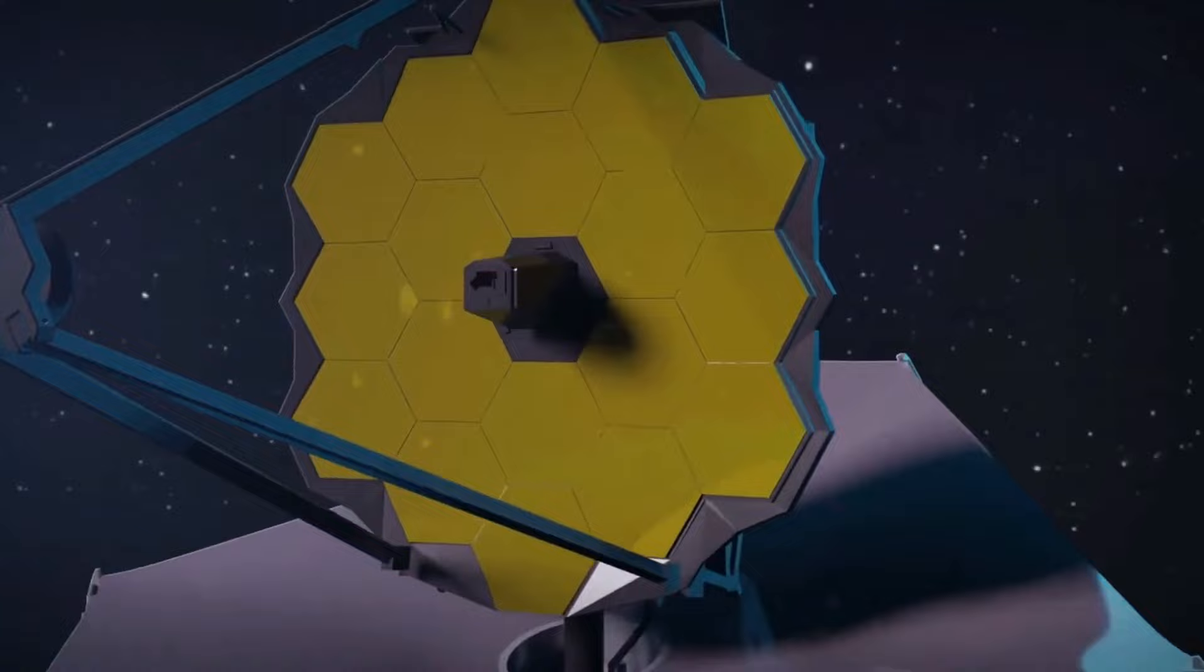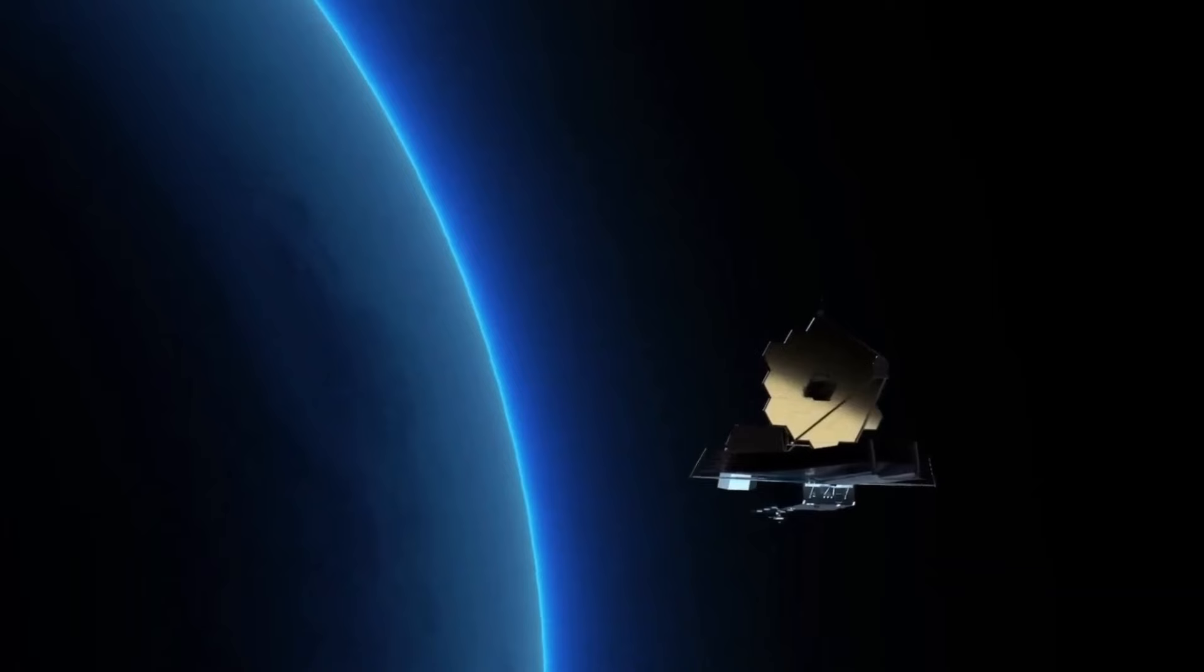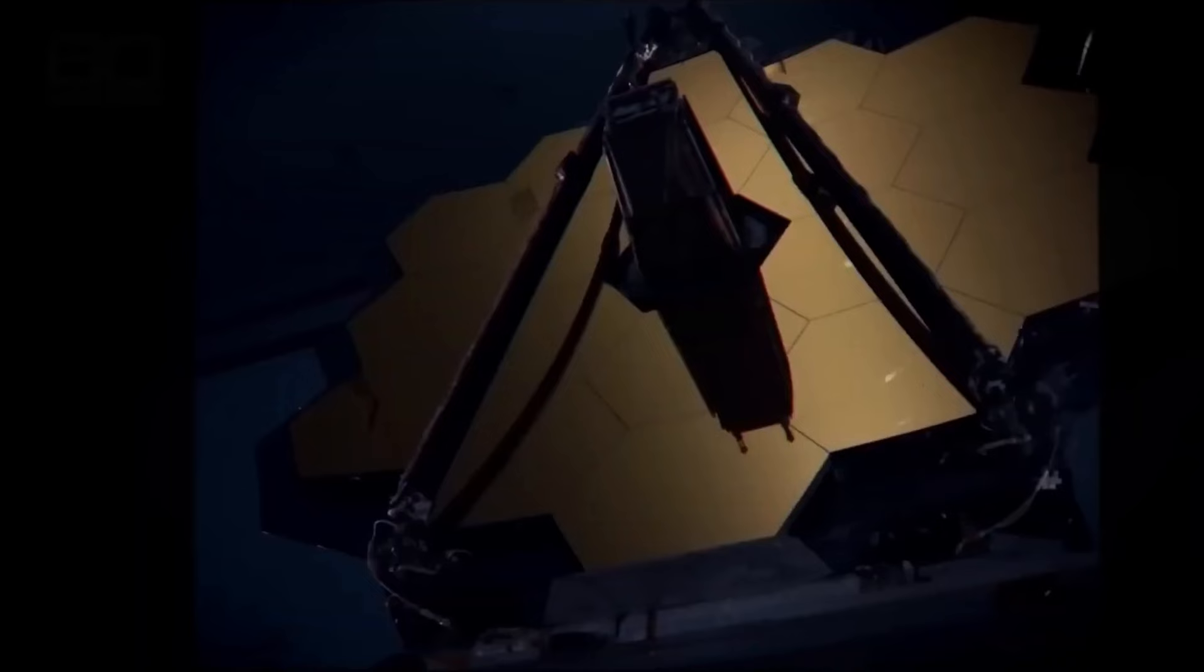Atop IC 2944 is the twinkling star Lambda Centauri, which is closer to Earth than the running chicken nebula at just 470 light-years away. The star is so bright that it's visible from Earth with the naked eye.